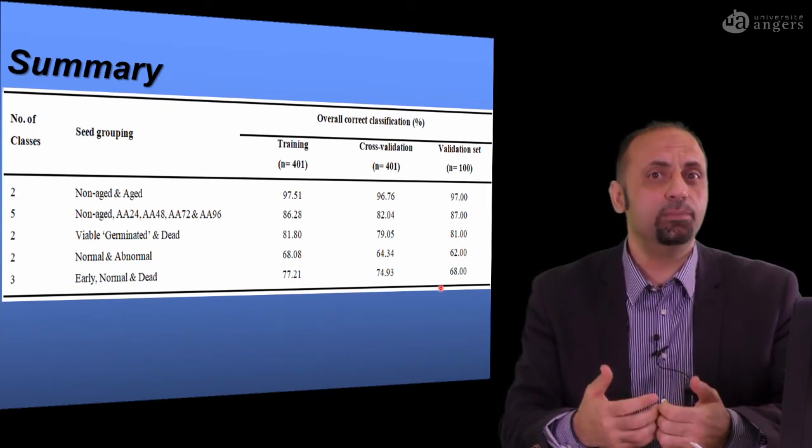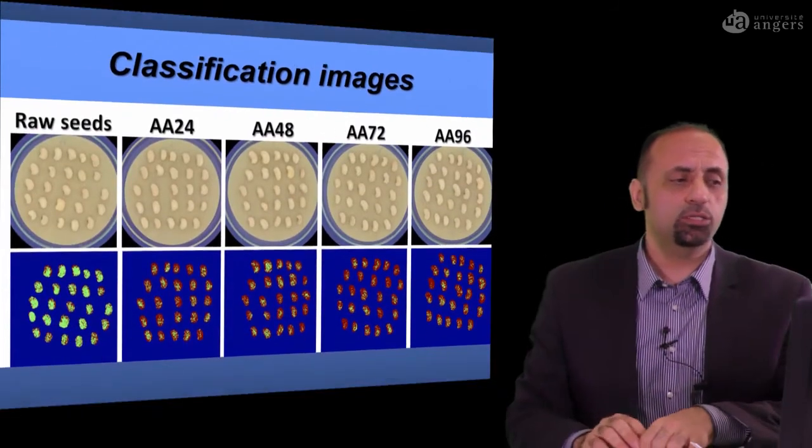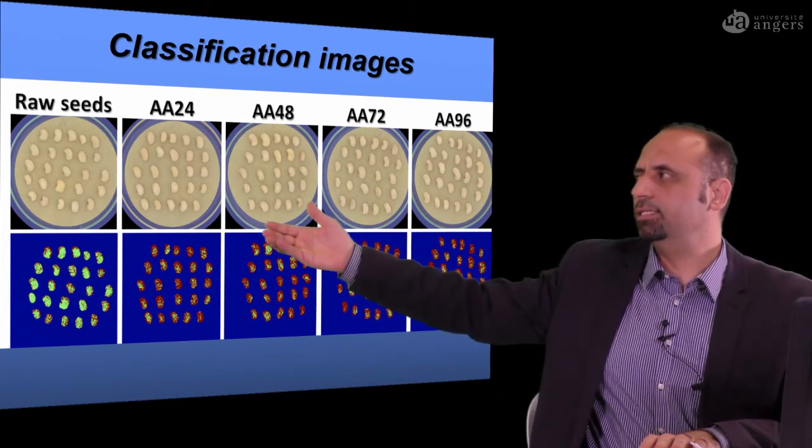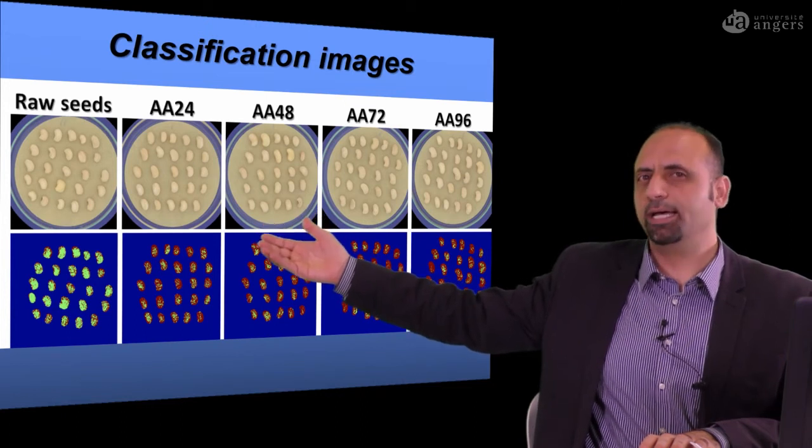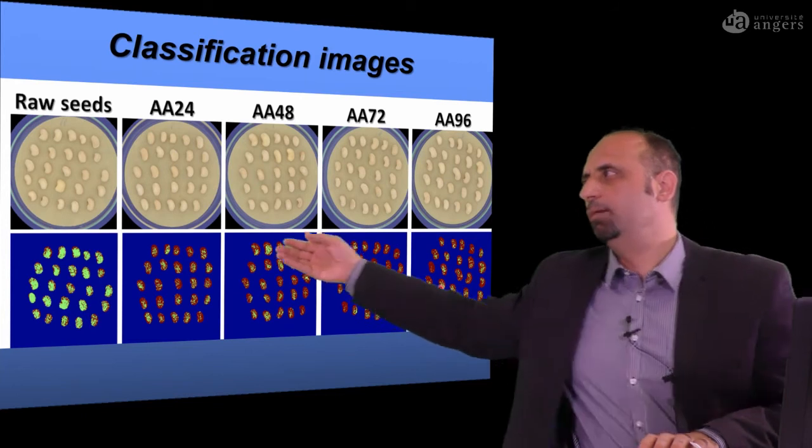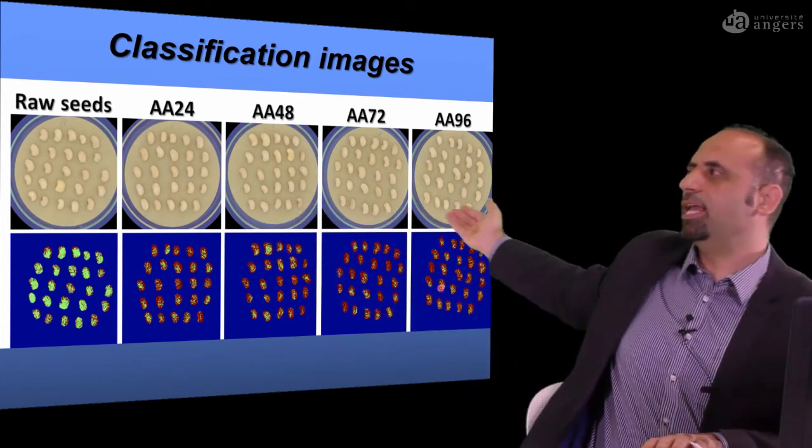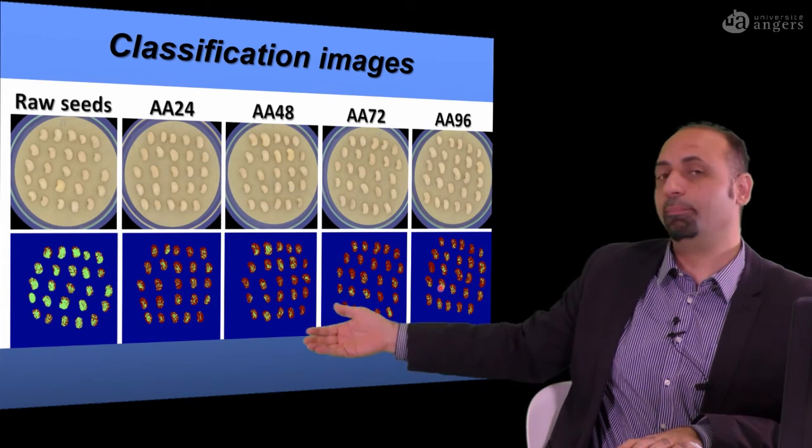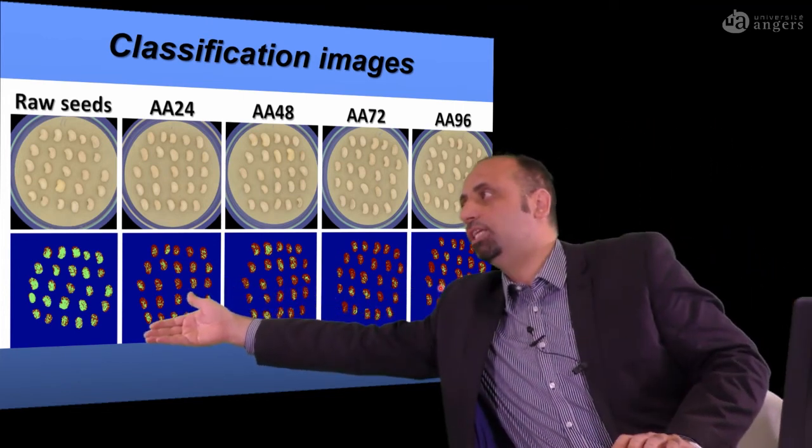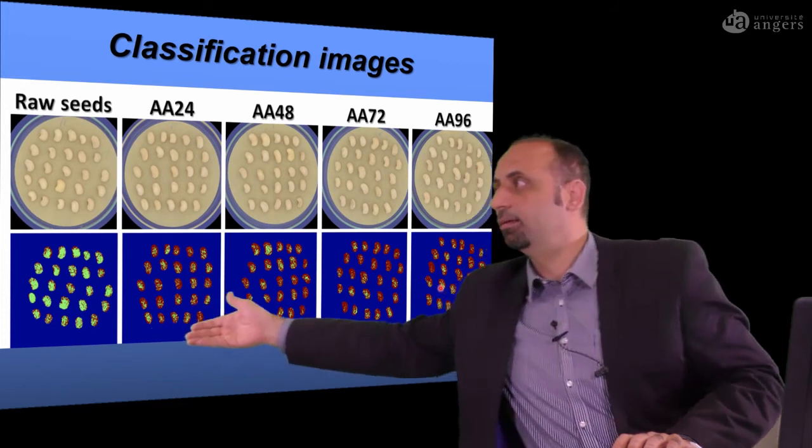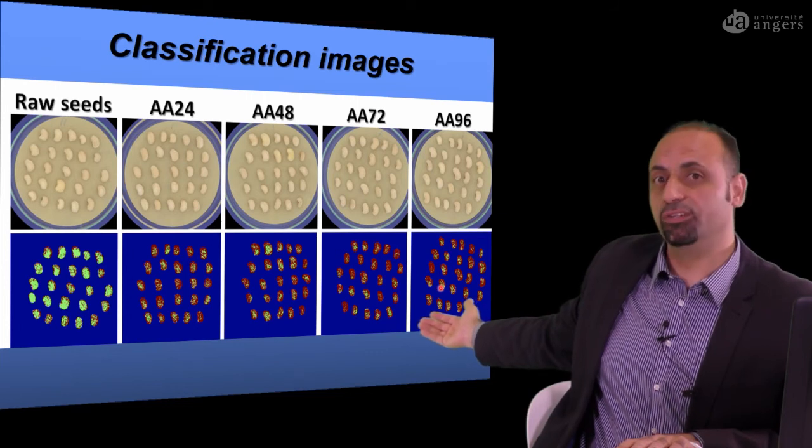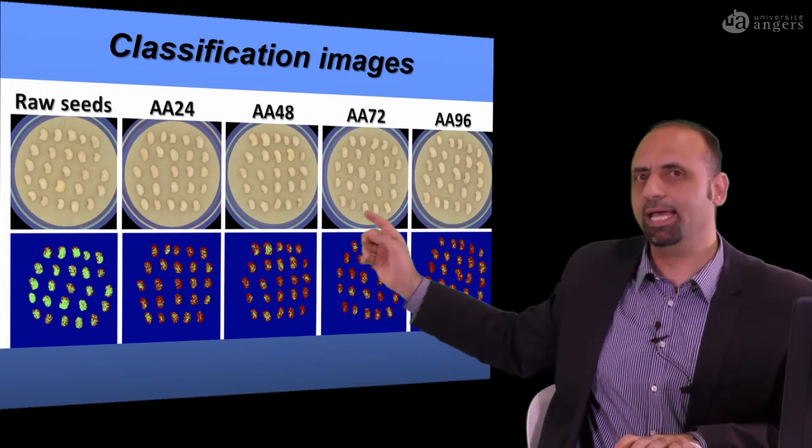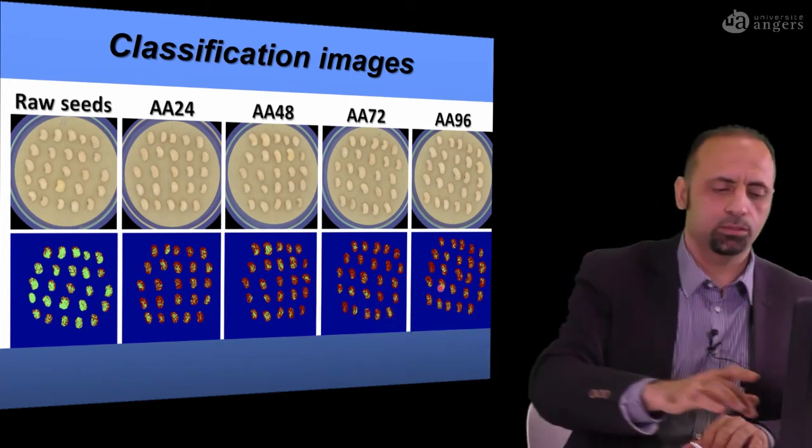We tried to build the classification map to transfer the model that we developed. This is a color image. By your naked eye, it is impossible to differentiate between the raw seeds and the seeds aged in different periods. But if you apply your prediction model, the model is applied for the whole seeds. The seeds that are not aged can be displayed in green color, but the other seeds that are already aged appear in red color. It's very, very optimistic because in non-contact and non-destructive technology, I can tell you this is already aged or non-aged.